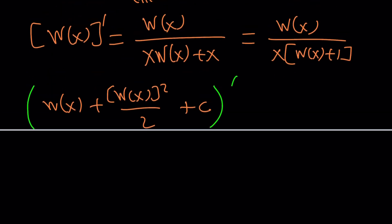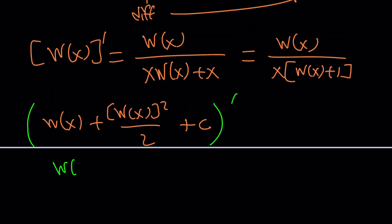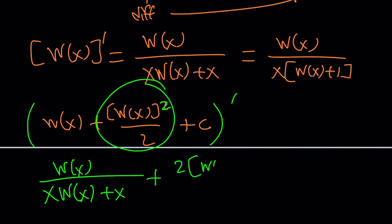you're going to get the derivative of W of x, which is basically W of x divided by x times W of x plus x. And, if you differentiate this, that's the power rule. So, you're going to bring the two to the front, reduce the power, and then multiply by the derivative of W of x, which is W of x divided by x times W of x plus x.